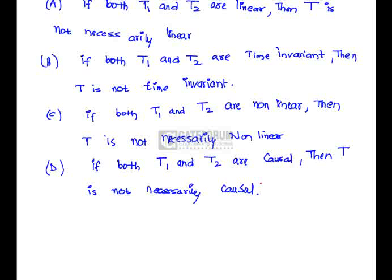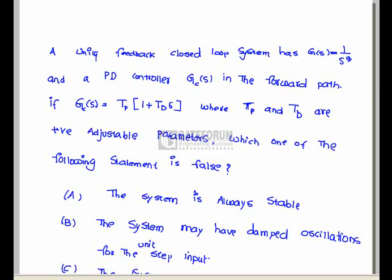If both are causal, then the cascaded system is also causal. Hence it is not true. Hence option C is correct. Question: A unity feedback closed loop system has open loop transfer function G(s) equals 1 by s squared.